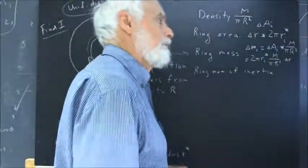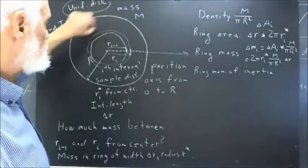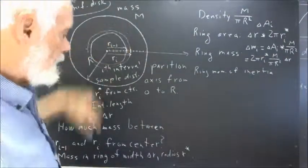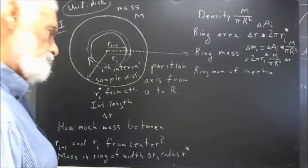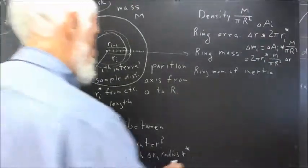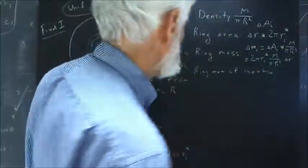Okay, well, what's the moment of inertia of the ring? Well, all the mass of the ring is concentrated close to distance R star. And I should have R sub i star, and I should have R sub i star down here. I've been using R sub i star.